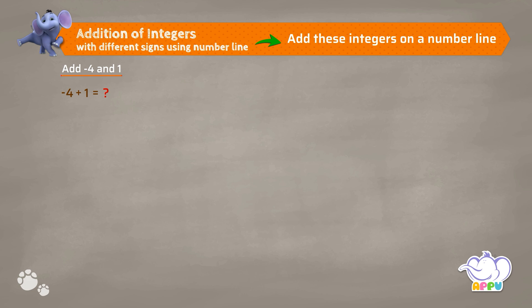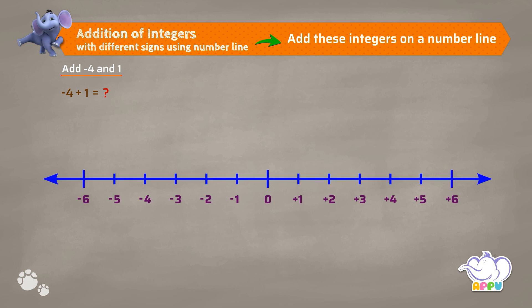Minus 4 is a negative integer and 1 is a positive integer. Let's add them on the number line. With reference to 0, we move 4 to the left to get minus 4.